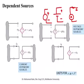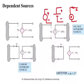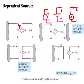Very often we need to use dependent sources. For example, a voltage controlled voltage source (VCVS) creates a voltage difference between two points, but its value depends on a controlling voltage Vs somewhere else in the circuit. The voltage V equals mu times Vs, where mu is a dimensionless constant of proportionality.